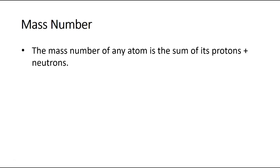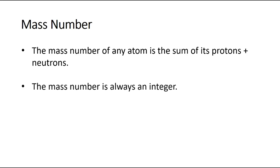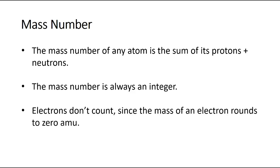The mass number of any atom is the sum of its protons plus its neutrons, because protons and neutrons each have a mass of 1 AMU, whereas electrons have negligible mass. So the mass of any atom is simply the sum of its protons and neutrons. That mass number is always going to be an integer because we use those rounded values. Electrons don't count because their mass is essentially negligible and we round that to 0 AMU. So A equals protons plus neutrons. Perhaps a more useful equation is calculating the number of neutrons: the number of neutrons is always going to be the mass minus the number of protons.